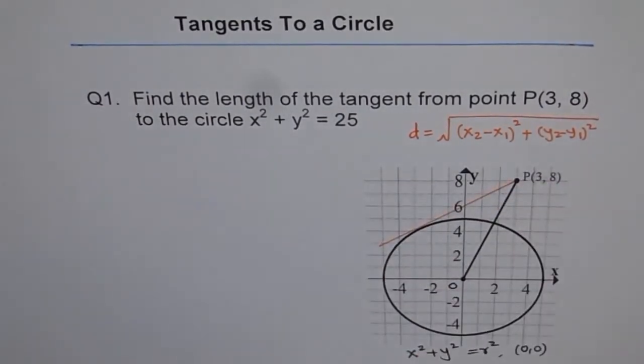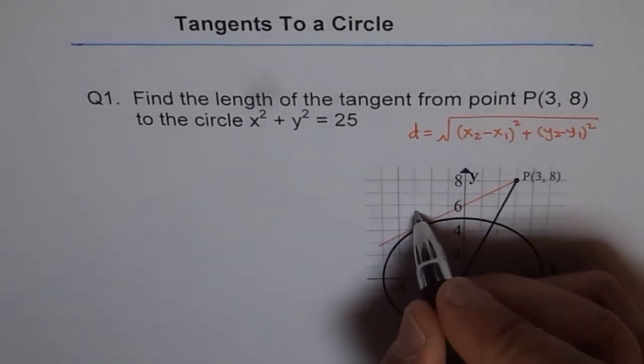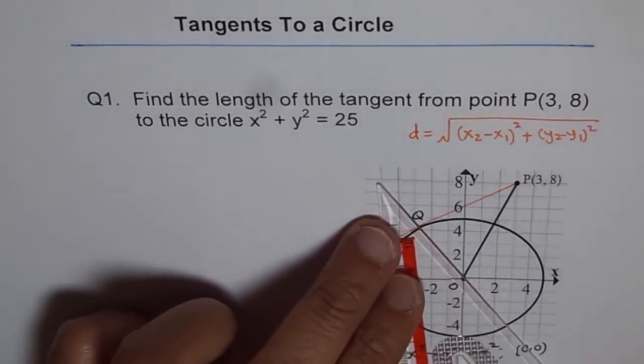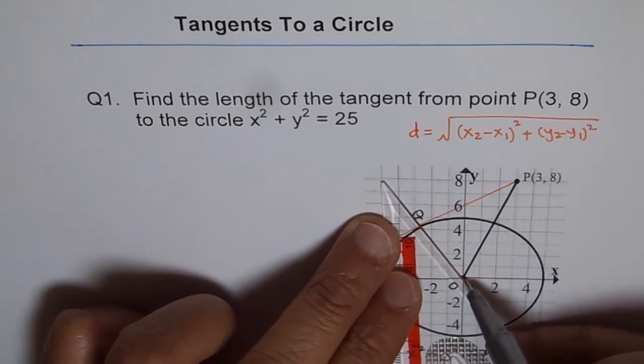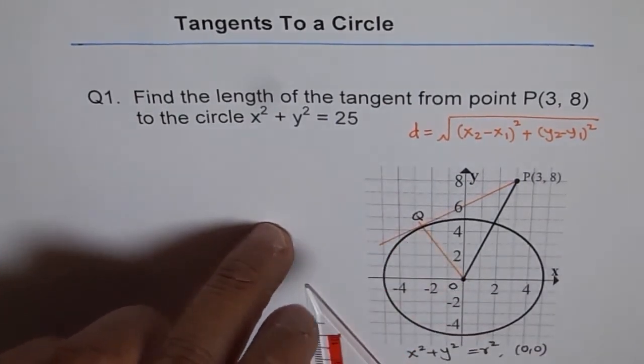Now, let this point where the tangent touches the circle be Q. In that case, we'll join Q with the center. So when we join Q with the center, OQ will be the radius.